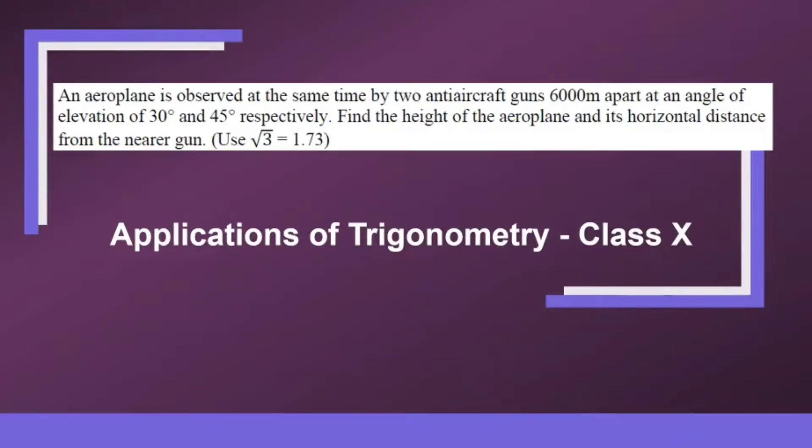An aeroplane is observed at the same time by two anti-aircraft guns 6,000 meters apart at an angle of elevation of 30 degrees and 45 degrees respectively. Find the height of the aeroplane and its horizontal distance from the nearer gun.